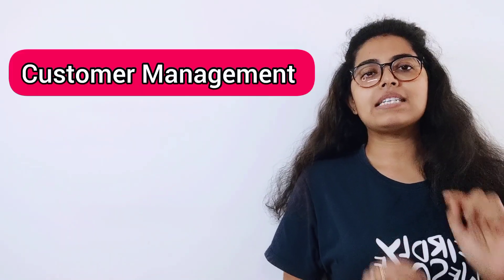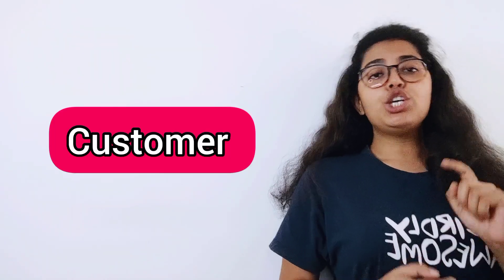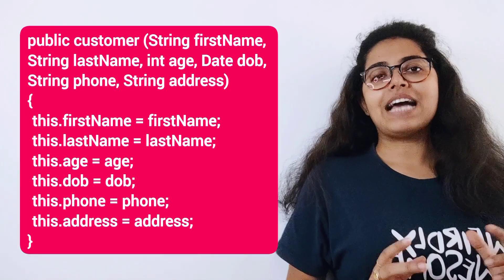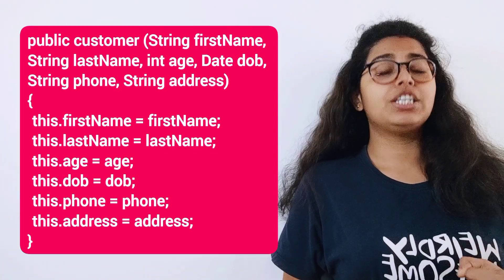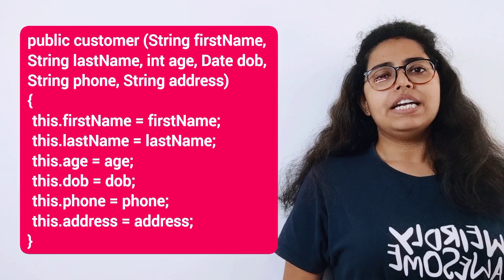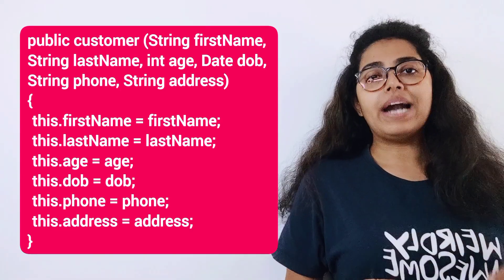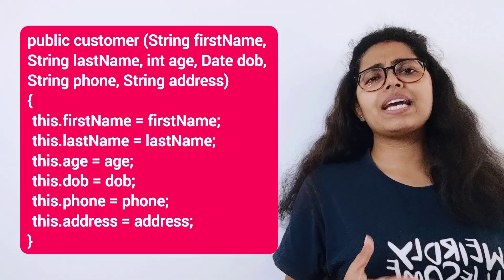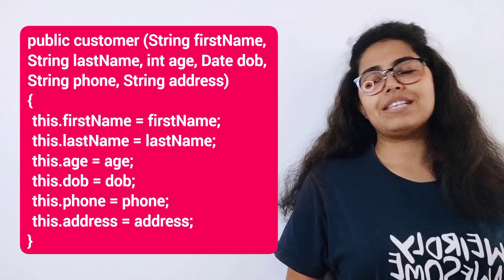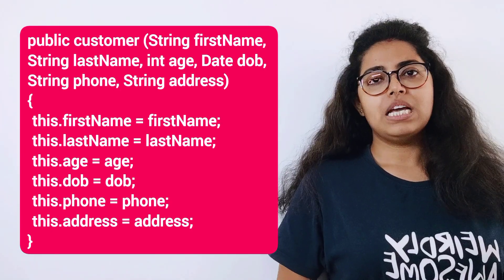Let's understand with one example. Imagine you have a customer management module in your application where the primary entity is customer. Your customer object has six attributes: first name, last name, age, date of birth, phone, and address. Now once customer object creation is done we don't want to change its state — we want it to be immutable. If we want to make an immutable customer class then we must pass all six arguments to the constructor. But what if only first name, last name, and phone are mandatory and the rest three fields are optional? Then we need more constructors.